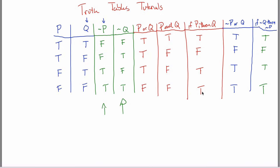In this specific case, notice that these two answers happen to be the same - true, false, true, true. That's because this statement is what's called the contrapositive of the if P then Q statement, and the contrapositive is always logically equivalent to the original statement. Don't worry about that fact unless you've already heard of what a contrapositive is - then you might think it's kind of cool that it ties together two different topics from this class.